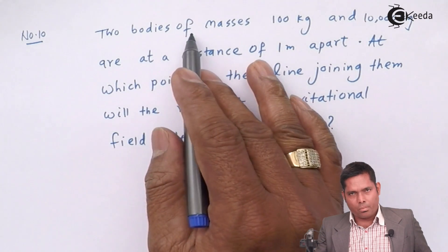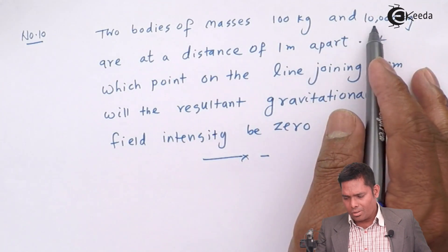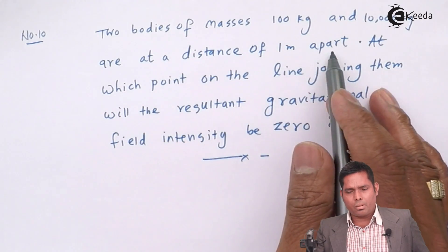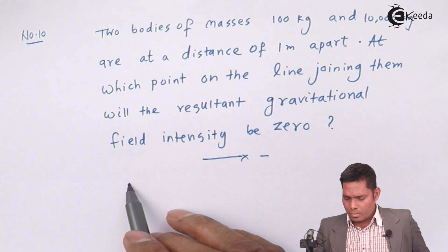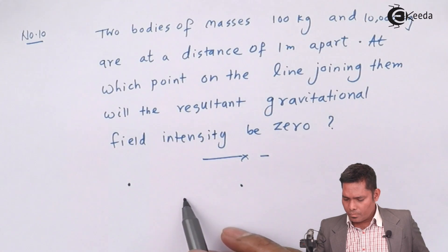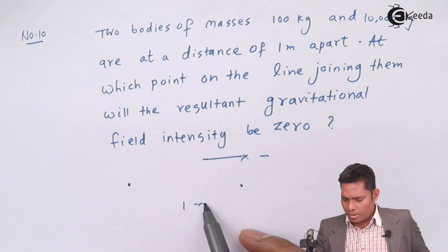The two bodies of masses 100 kg and 10,000 kg are at a distance of one meter apart. So these are two bodies one meter apart separation.